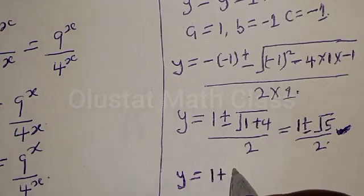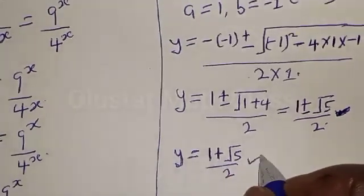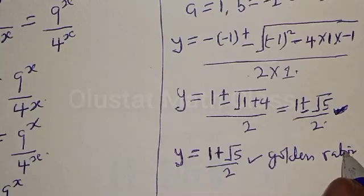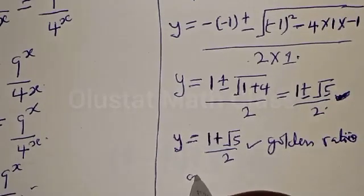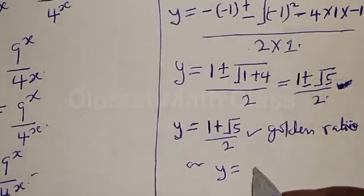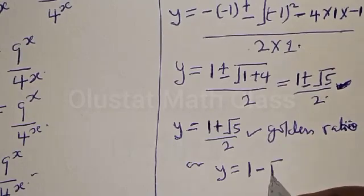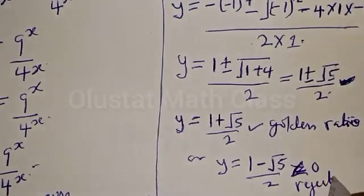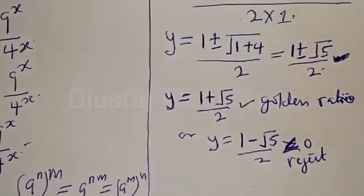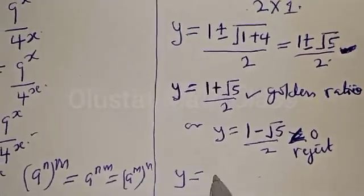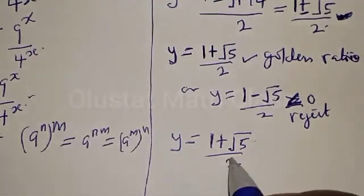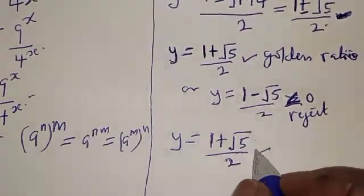Therefore y equals (1 plus root 5) over 2 — this is the golden ratio. Or y equals (1 minus root 5) over 2, but this value is less than zero, so we reject it. Therefore the value of y is (1 plus root 5) over 2, which is the golden ratio.